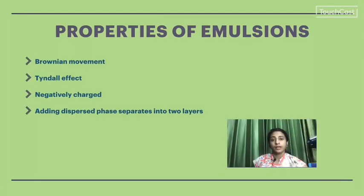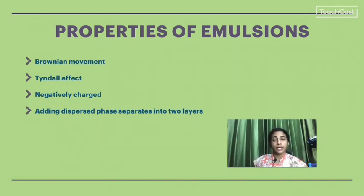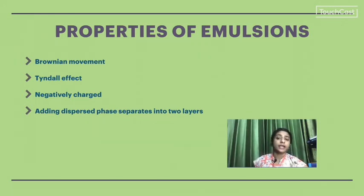The properties of emulsions include: Brownian movement and the Tyndall effect. Emulsions carry a negative charge. Adding more of the dispersed phase separates the emulsion into two layers — the dispersed phase and dispersion medium separate because they are two different liquids. Methods to break emulsions include centrifugation, freezing, and boiling.